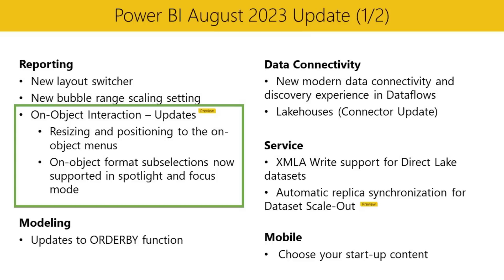On-object format sub-selections are now supported in Spotlight and Focus mode. When spotlighting a visual or expanding the visual in Focus mode, you can now use on-object formatting to sub-select and format styles. In Focus mode, it can be hard to tell when you've entered Format mode with just the subtle border. To address this, we've added a new button to the header to better indicate when you're in Format mode and how to exit Format mode while staying in Focus mode.